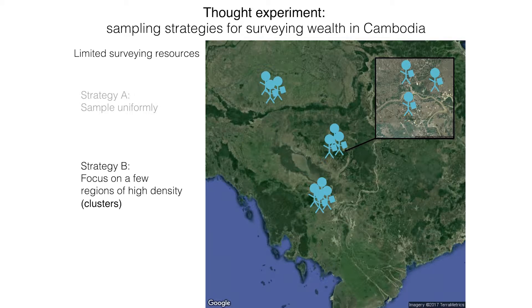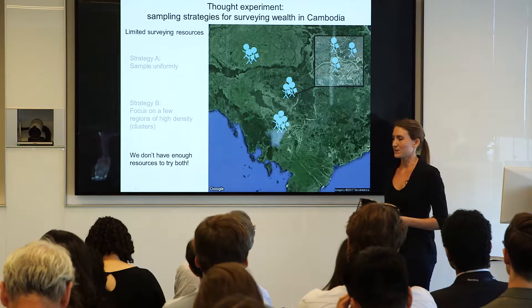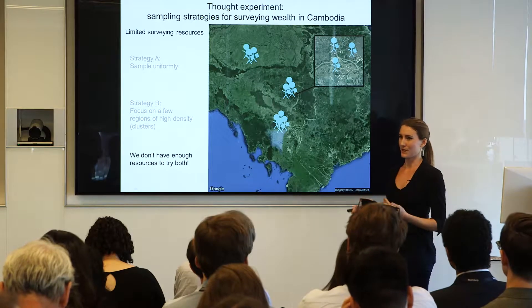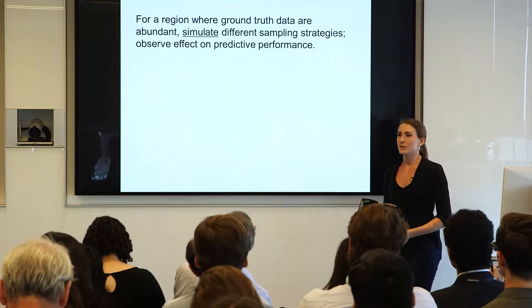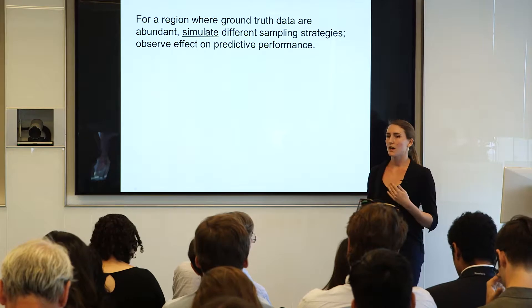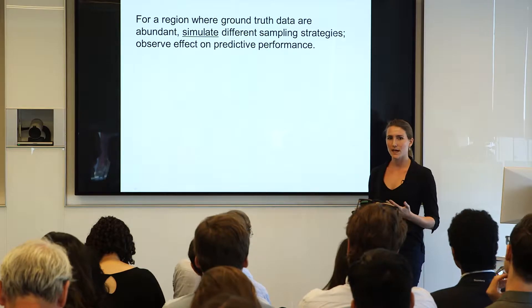But by clustering, you're sacrificing the variety of data — you're no longer looking at as many regions of the space. We'd like to try out both strategies and figure out which one was more effective. But we're researchers with limited money; we have to choose one and implement it. So our work shifts this regime: rather than being limited by resources, we have all the ground truth data we want. We simulate what would have happened under different sampling strategies, observe the predictive performance of our model, and establish a baseline comparison.